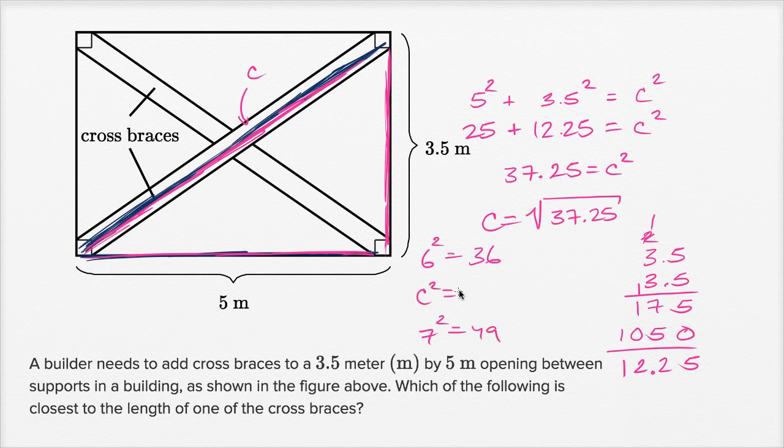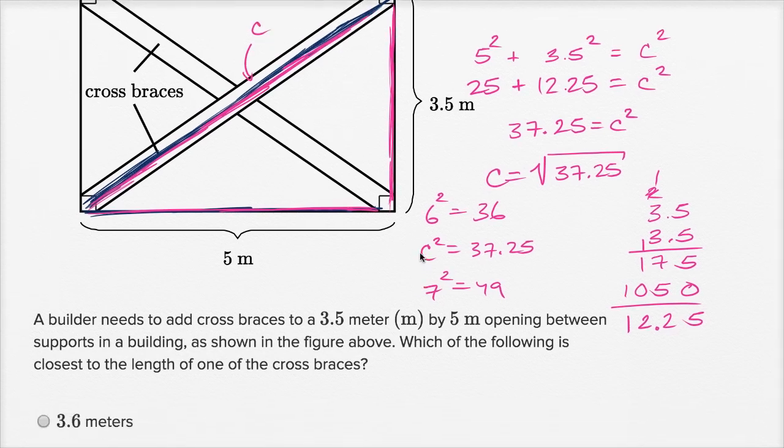37.25 is closer to 36, it's larger than 36 but closer to 36 than it is to 49. So I'd approximate c would be between 6 and 7, and it's going to be closer to 6.